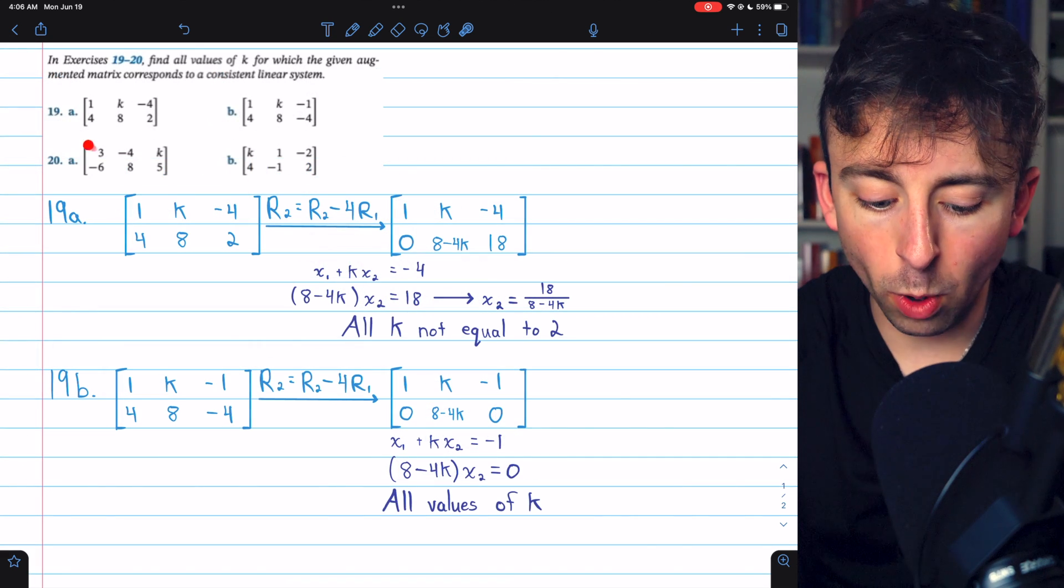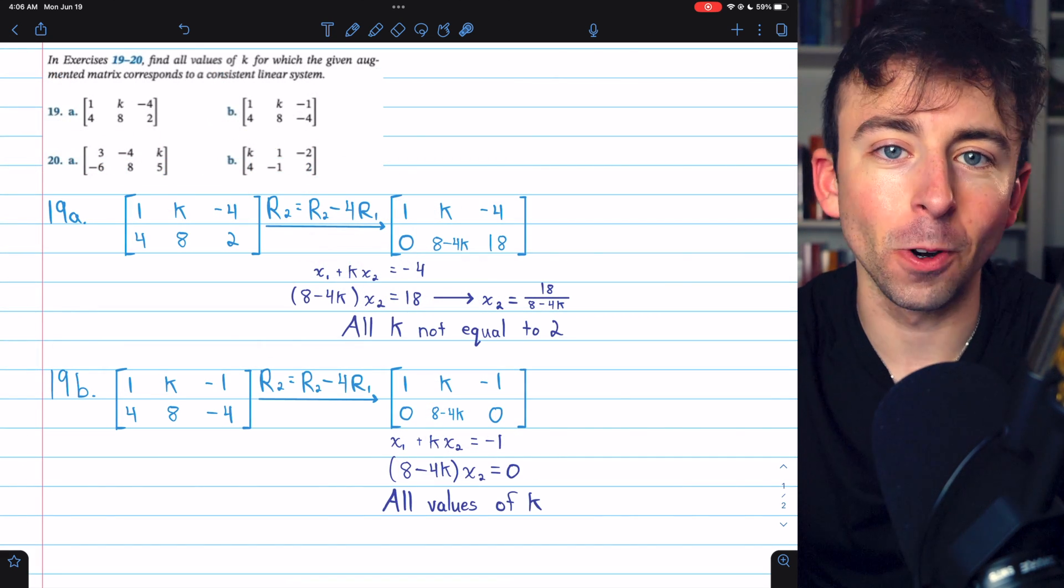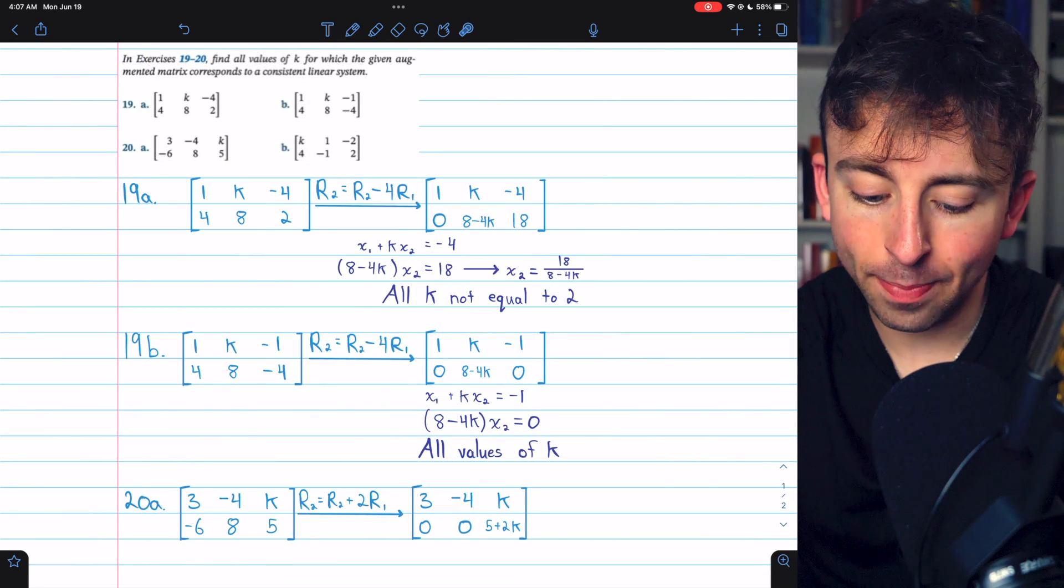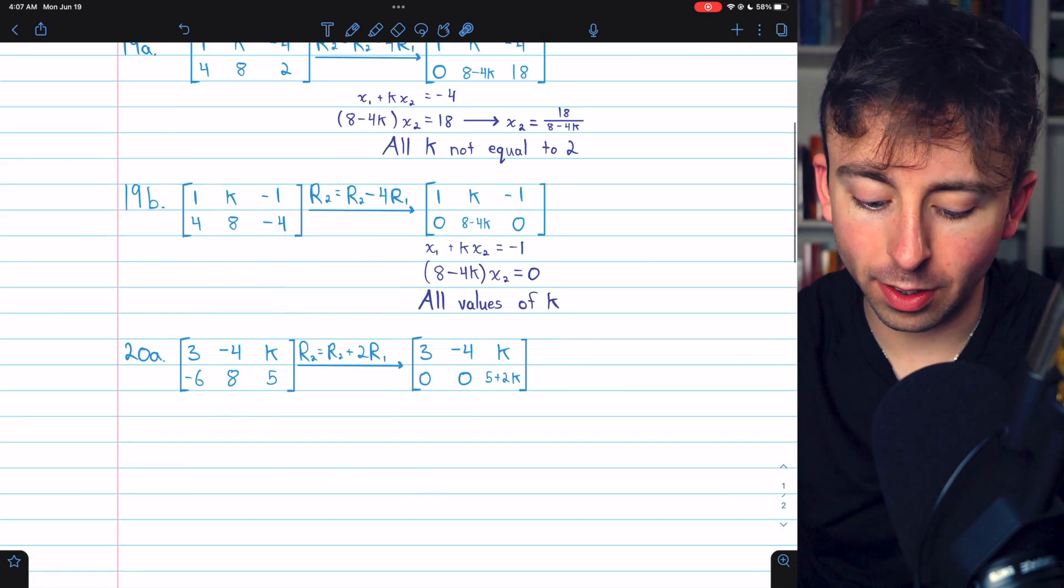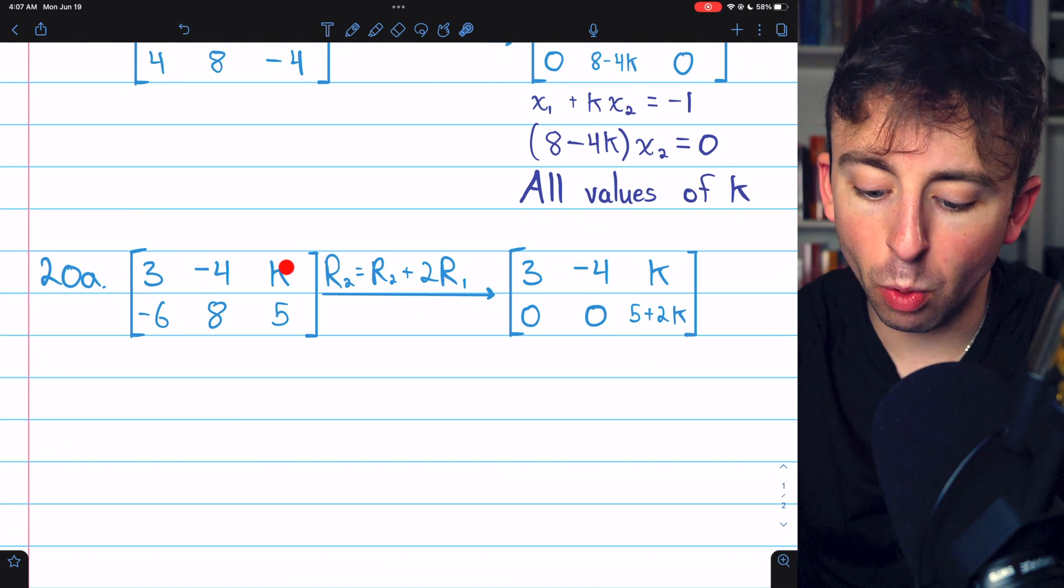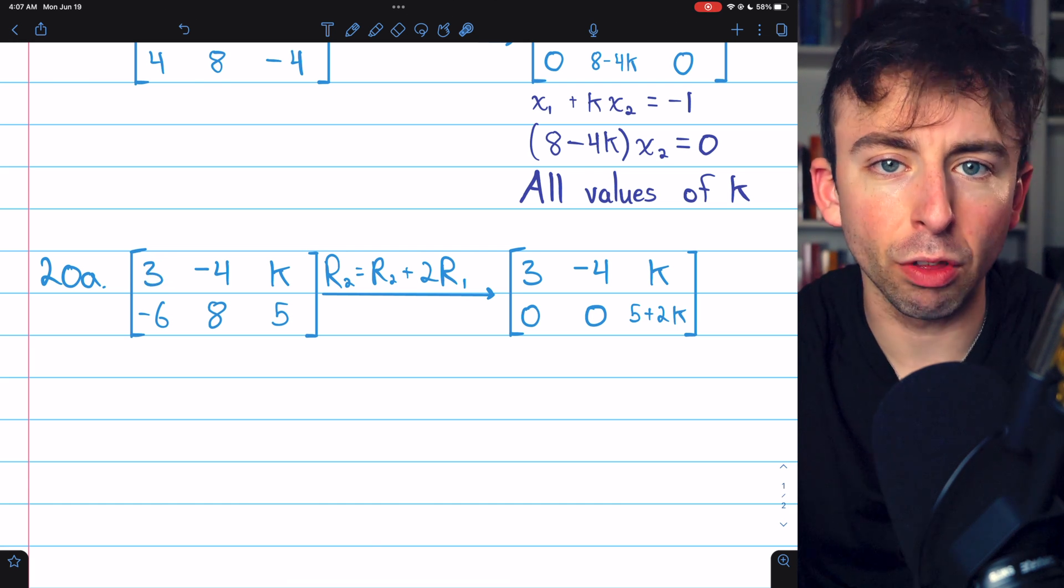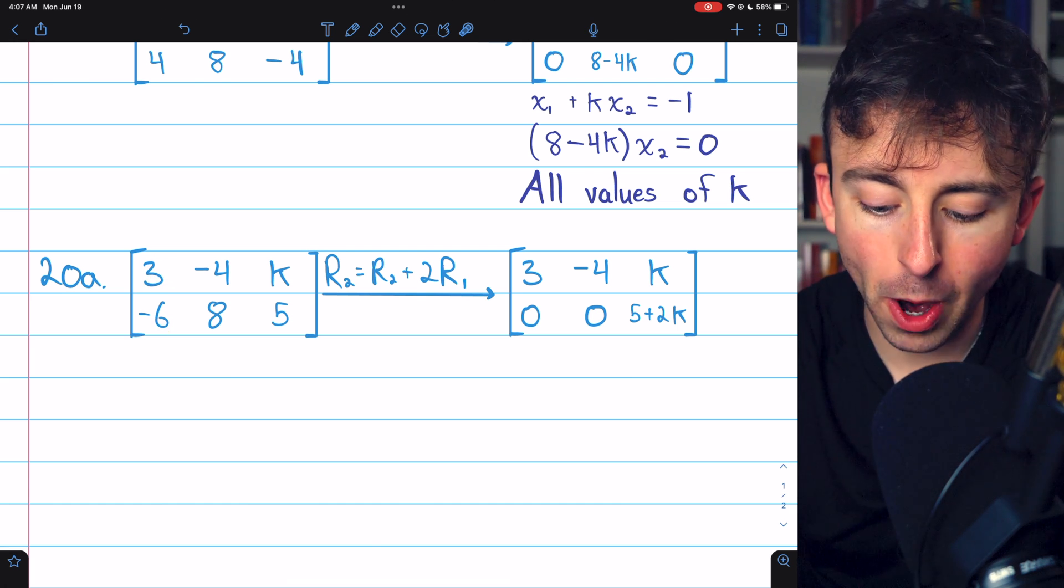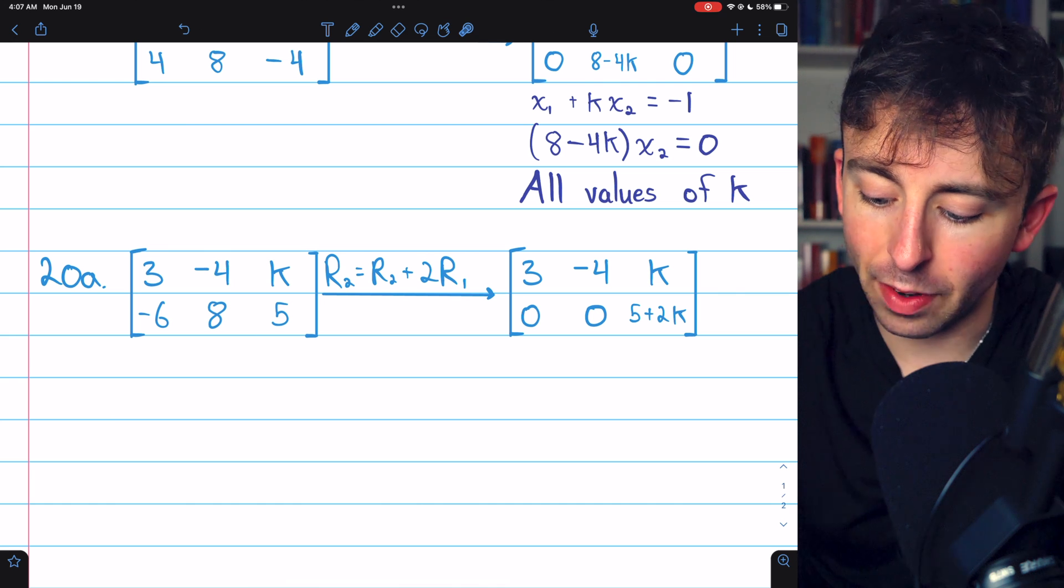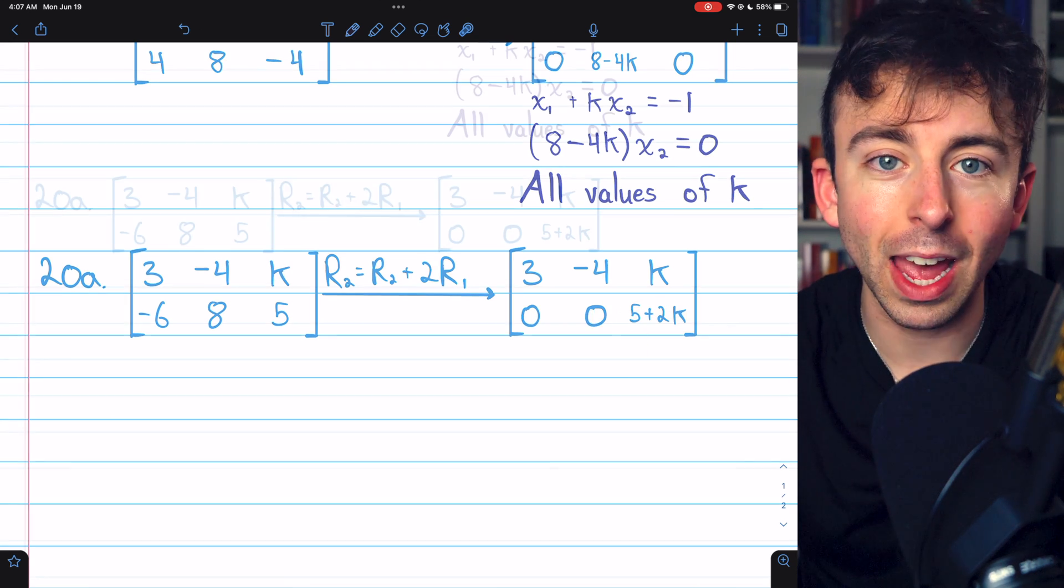All right, we'll do one more, finishing off with 20a, and I'll let you try 20b on your own. Let me know how that goes in the comments. Here is 20a, I've written the augmented matrix down here, and we'll begin by adding two copies of row 1 to row 2 in order to get this entry below the leading 3 to be a 0. That gives us this. Of course, 8 plus negative 8 is 0, and then 5 plus 2k is 5 plus 2k.